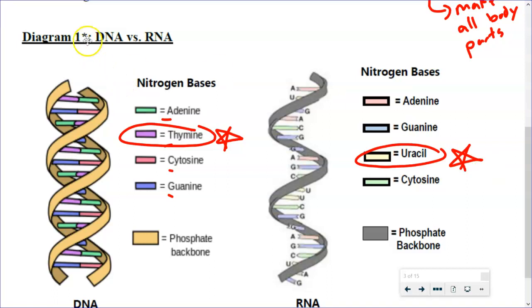Something I want you to notice: in the DNA, we have our four bases we talked about in past chapters — adenine, thymine, cytosine, and guanine, or A's, T's, C's, and G's.